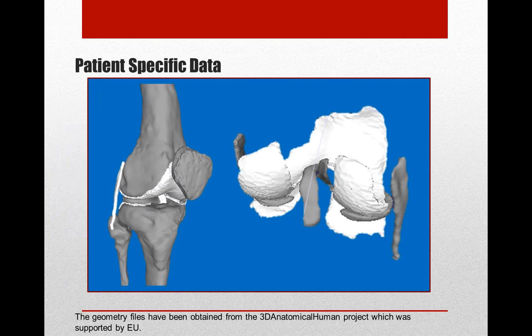We exchanged the standard knee into a patient-specific knee. From a European project called the 3D Anatomical Human, we obtained very detailed, high-quality MRI data of a subject. This included femur, tibia, fibula, and patella, as well as additional cartilage as STL files — cartilage on the femur side, and on the tibial side for both lateral and medial compartments.